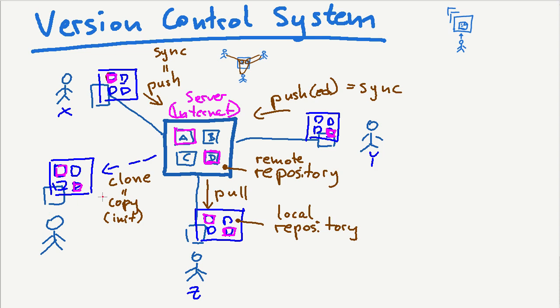Next we want to talk about what is a so-called merge, which is just integrating files. Let's make it clear. Let's say your friend, Mr. W, decided to change file B. And at the same time, you also decided to change file B. Then your friend Mr. W pushes it back to the server — synchronizes it to the server. So now the server has Mr. W's version of file B. And now you also want to push to the server. But the problem is that the server has a different version. You had the original version of file B and made your changes, while Mr. W had the original version and made his changes.